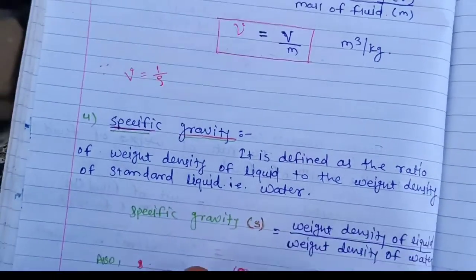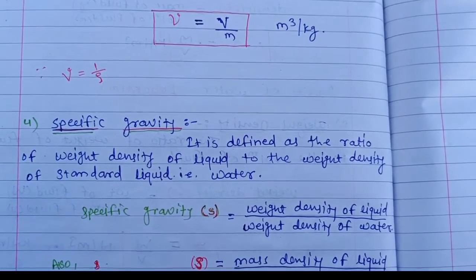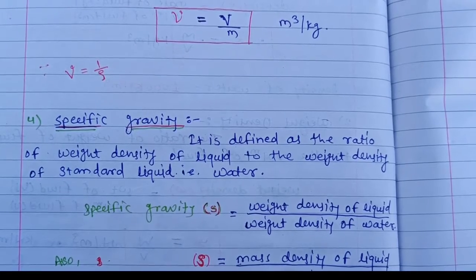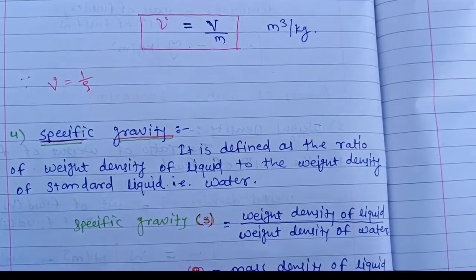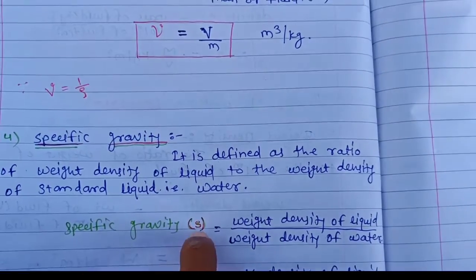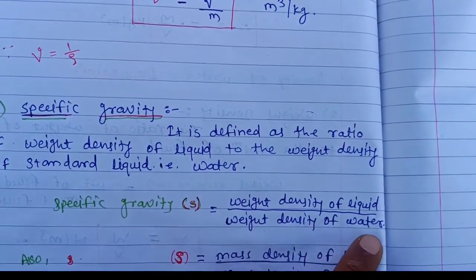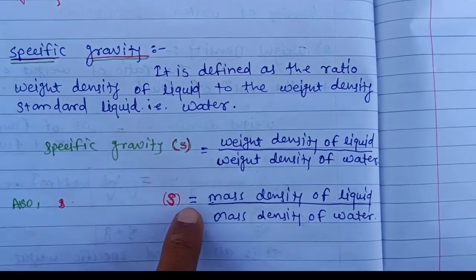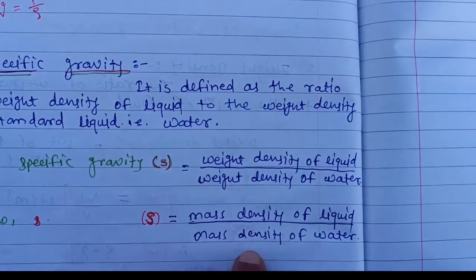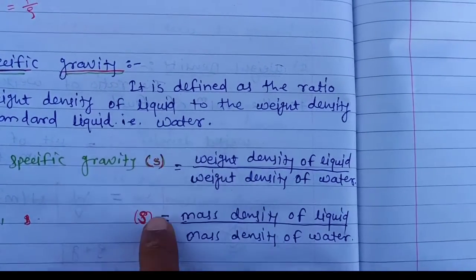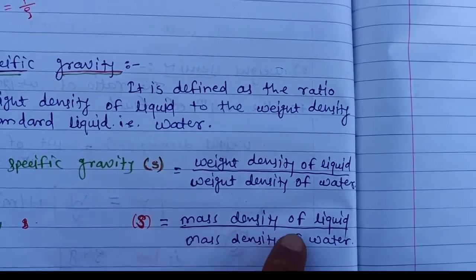Specific gravity is defined as the ratio of weight density of a fluid to the weight density of a standard liquid, that is water. It is denoted by small s. The formula is s equals weight density of liquid divided by weight density of water, or equivalently, mass density of liquid divided by mass density of water.